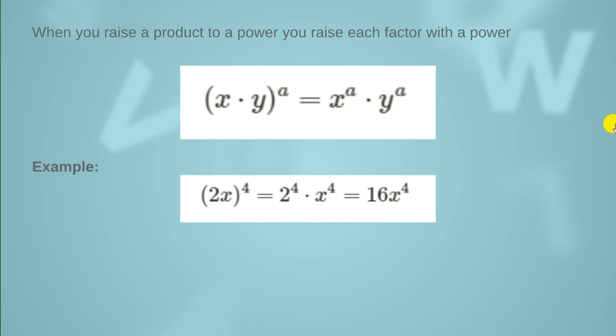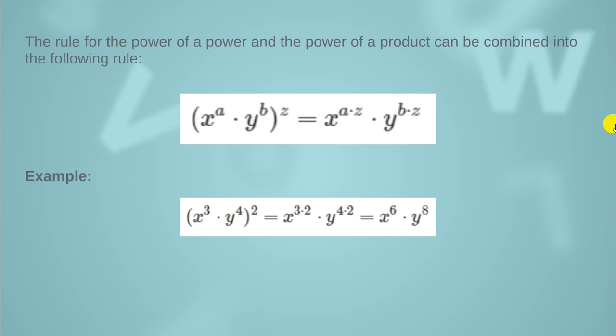I hope you got my point — it is not so difficult, you just need to focus on some little rules, and once you understand them you will face no difficulty. Now another rule: the rule for the power of a power and the power of a product can be combined. We have the expression x raised to the power a multiplied by y raised to the power b, and the combination is raised to the power z. This means every term inside gets the exponent z multiplied with it.